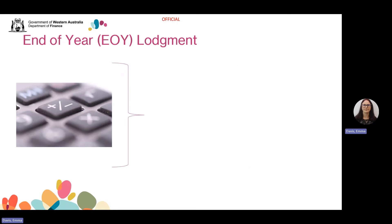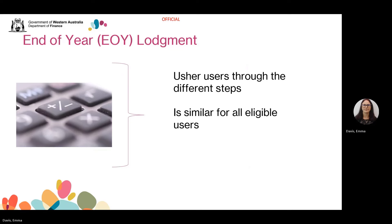The End of Year Lodgement function in Revenue Online (ROL) is a step-by-step guided process. This has been designed to assist users by ushering them through the steps to submit required wage information to Revenue WA, so we can successfully reconcile their accounts for the financial year. This is similar for all eligible users, with slight variations based on what they have to submit. End of Year Lodgement is not mandatory — users can still manually submit all their required wage details by navigating through Revenue Online and lodging each of the details separately. However, it does make it easier for you by guiding you through the entire process.